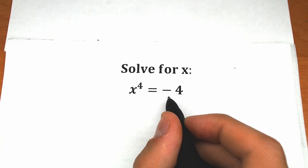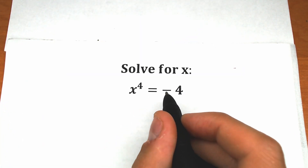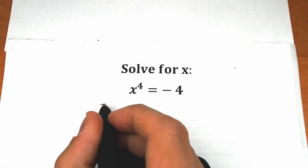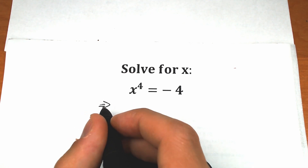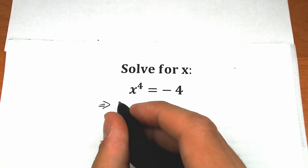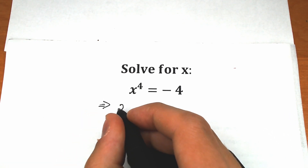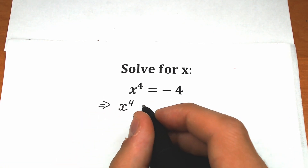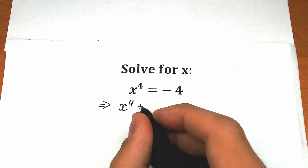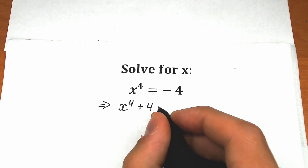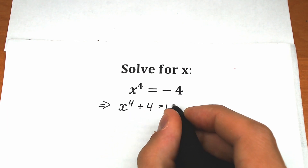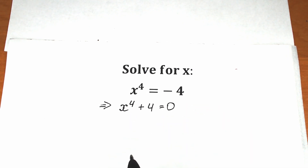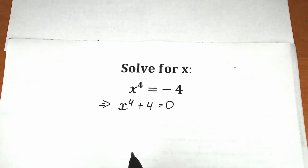First of all, let's bring this minus 4 from the right side to the left side. So we have x to the fourth power plus 4 equal to zero. We're just bringing this minus 4 from right to left.